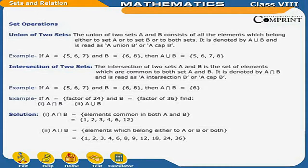Example: if A = set of factors of 36, find A ∩ B and A ∪ B. Solution: first, A ∩ B equals the set of elements common in both A and B = {1, 2, 3, 4, 6, 12}. Second, A ∪ B equals the set of elements which belong to either A or B or both = {1, 2, 3, 4, 6, 8, 9, 12, 18, 24, 36}.